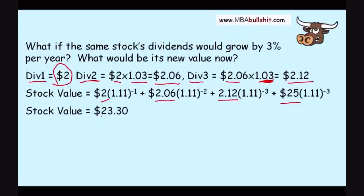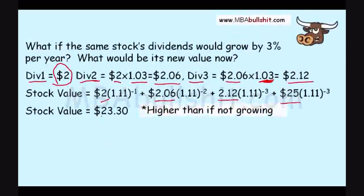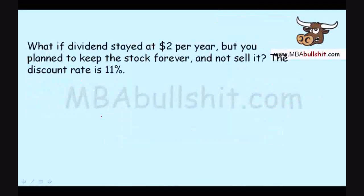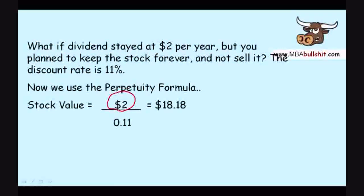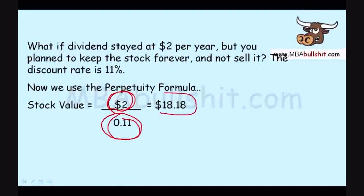It's a bit higher because now your dividend is growing, and of course it's much nicer to have a dividend or cash which is growing. So it's higher than when it was not growing. Next: what if the dividend stayed at $2 per year, but you plan to keep the stock forever and not sell it? The discount rate is 11%. For this one, we use the perpetuity formula, which is the dividend amount divided by the discount rate. Dividend amount divided by the discount rate gives us $18.18.